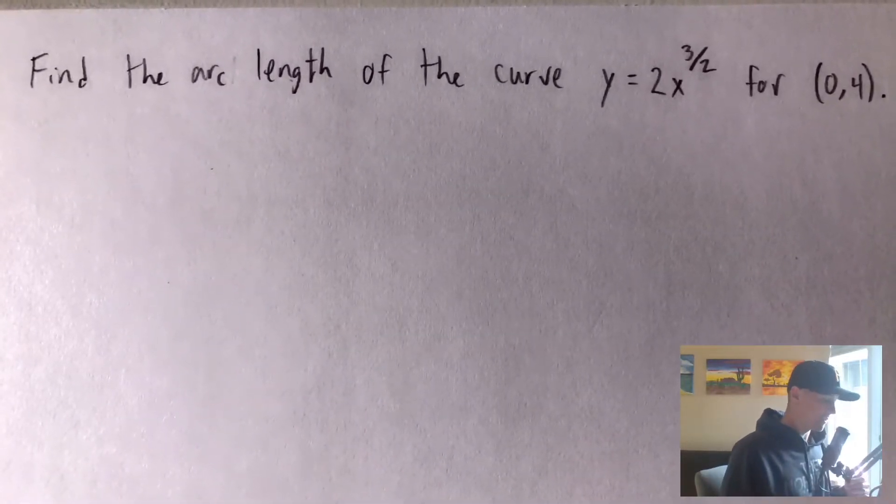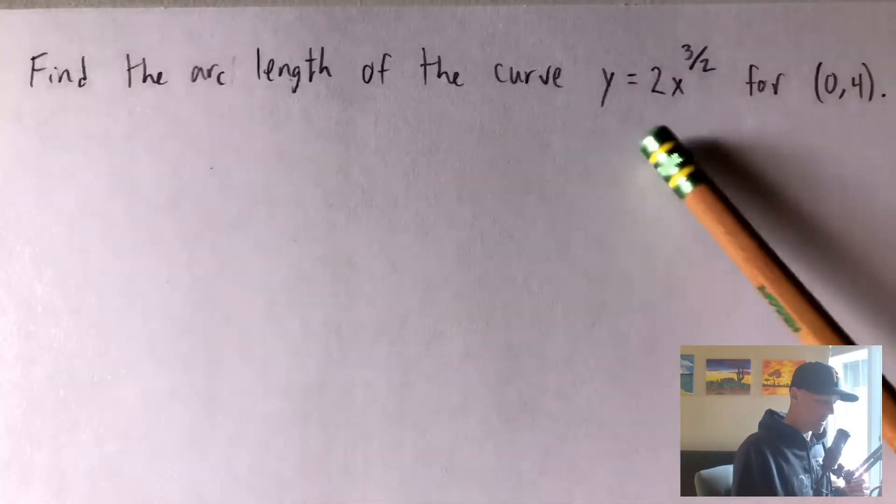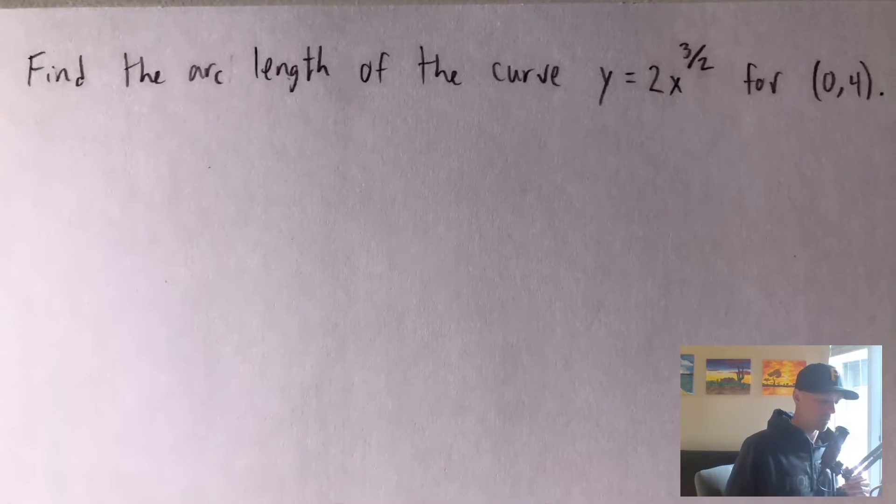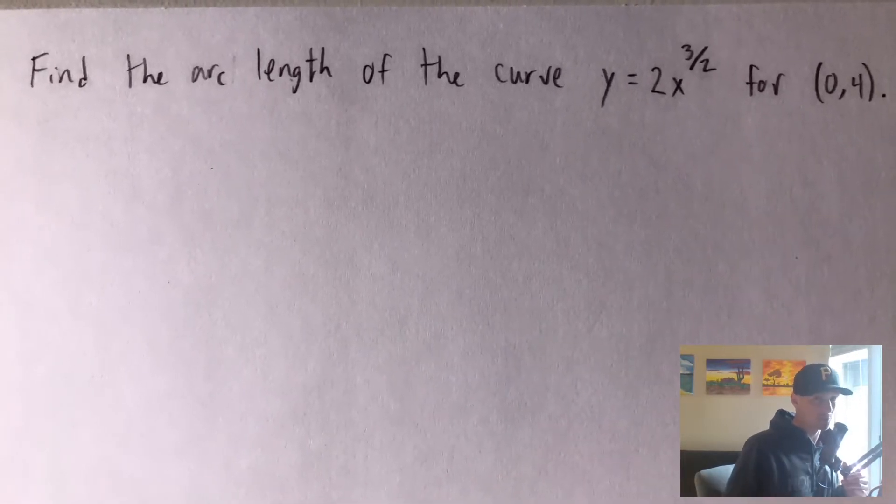Today I'm going to be showing you how to find the arc length of the curve y equals 2x to the 3 halves for the domain of 0 to 4. So this basically just means from x equals 0 to x equals 4.